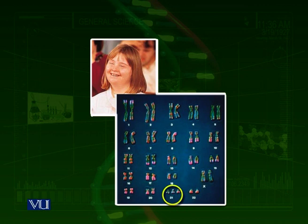Out of 23 pairs, in just one pair there is a non-disjunction. And the fusion of one normal gamete from a normal parent with one gamete from a parent where non-disjunction occurred — which has an extra chromosome — results in a very serious disorder: Down syndrome.